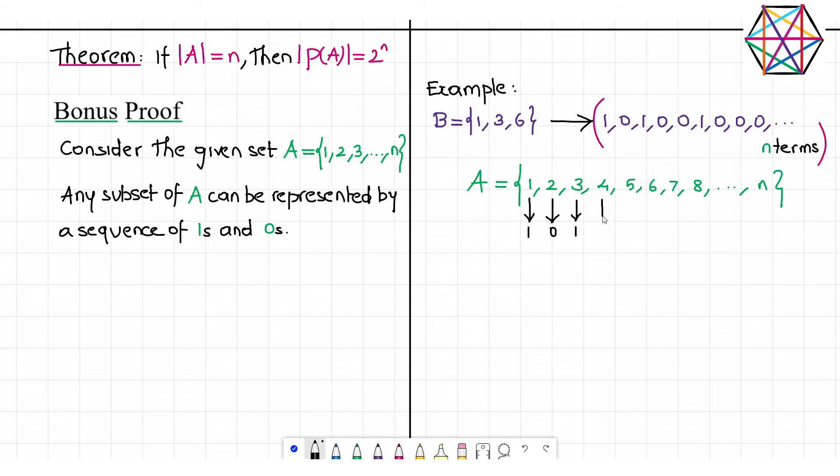5 is not part of B, so 0 again. 6 is part of B, so 1. 7 is not part of B. After 6, all these numbers are not part of set B, hence all the terms will be 0 after 6.